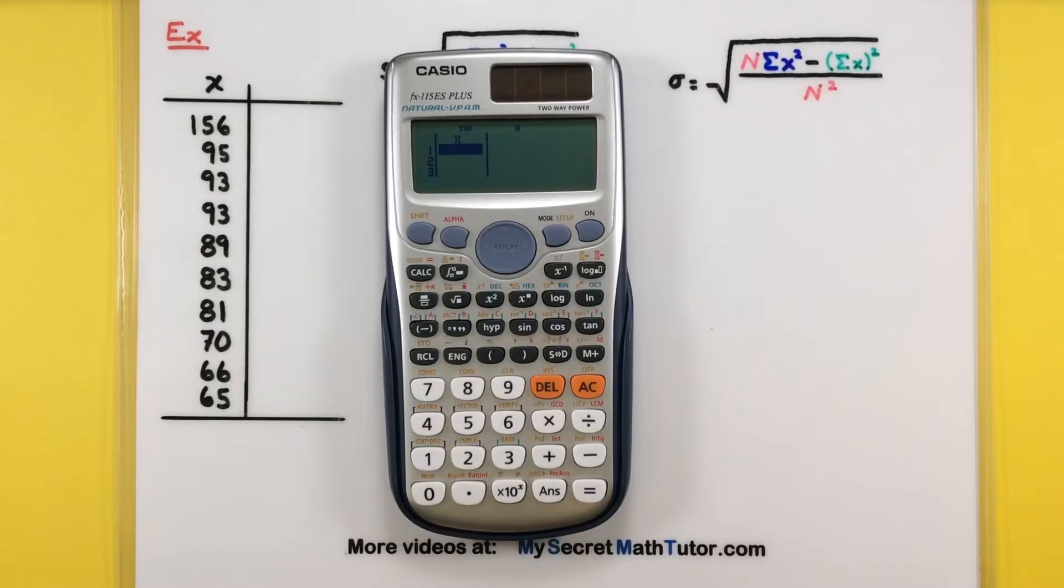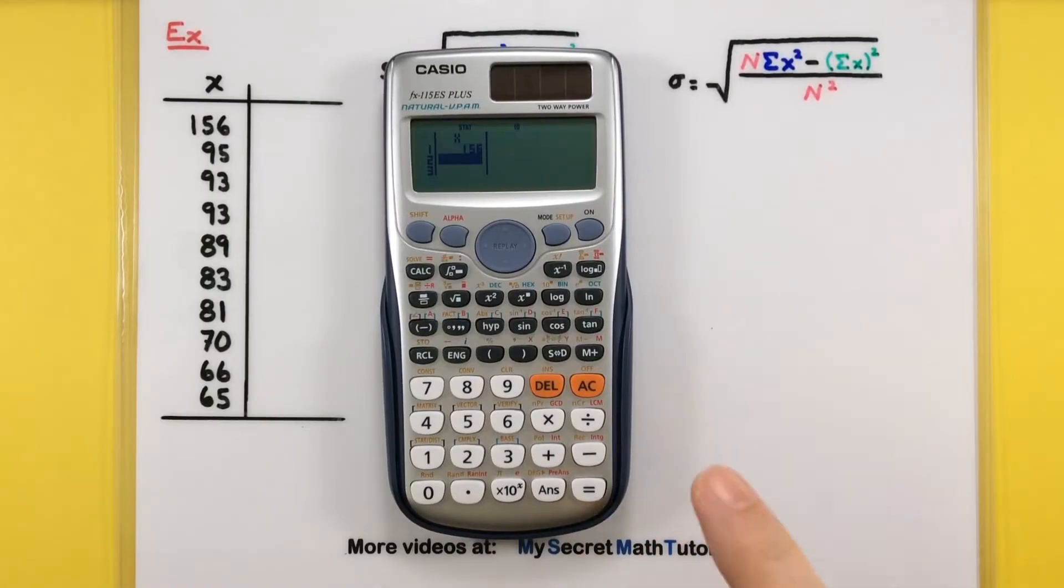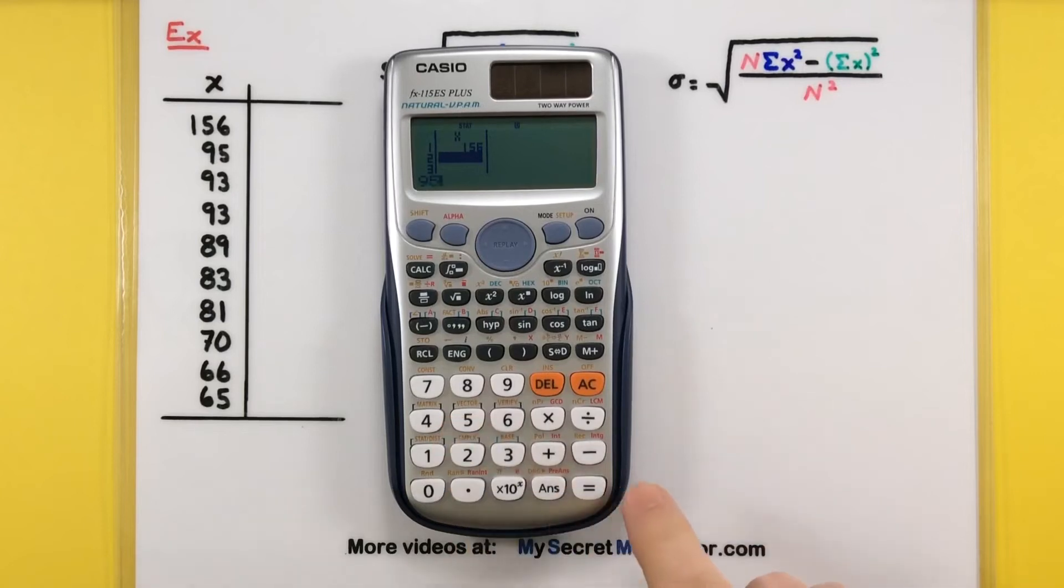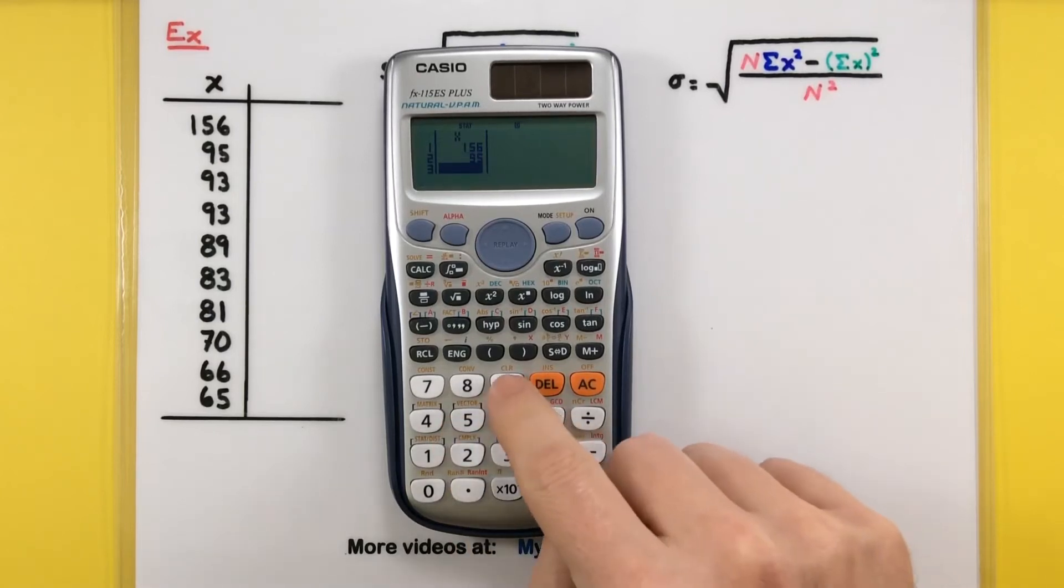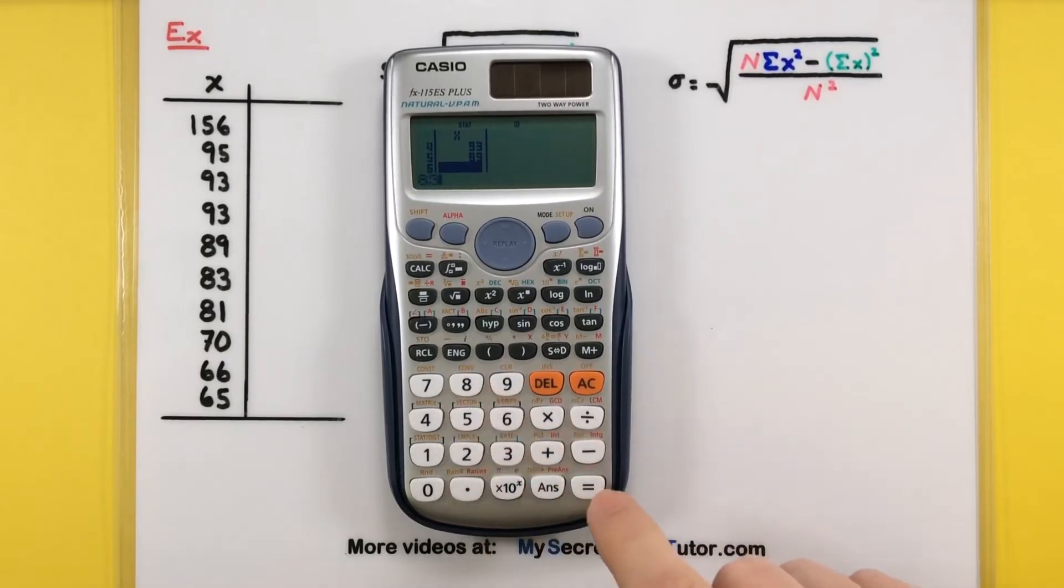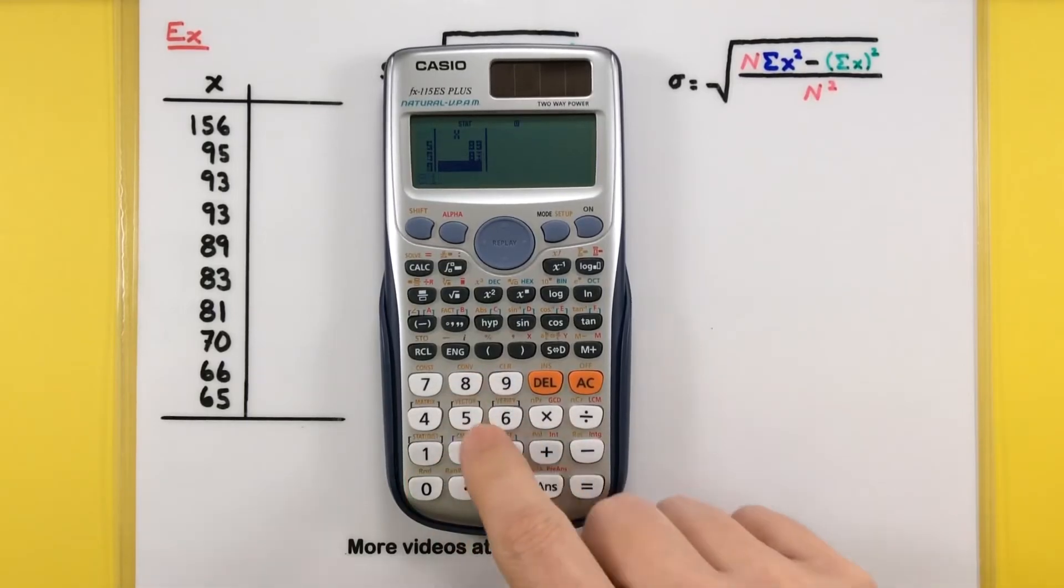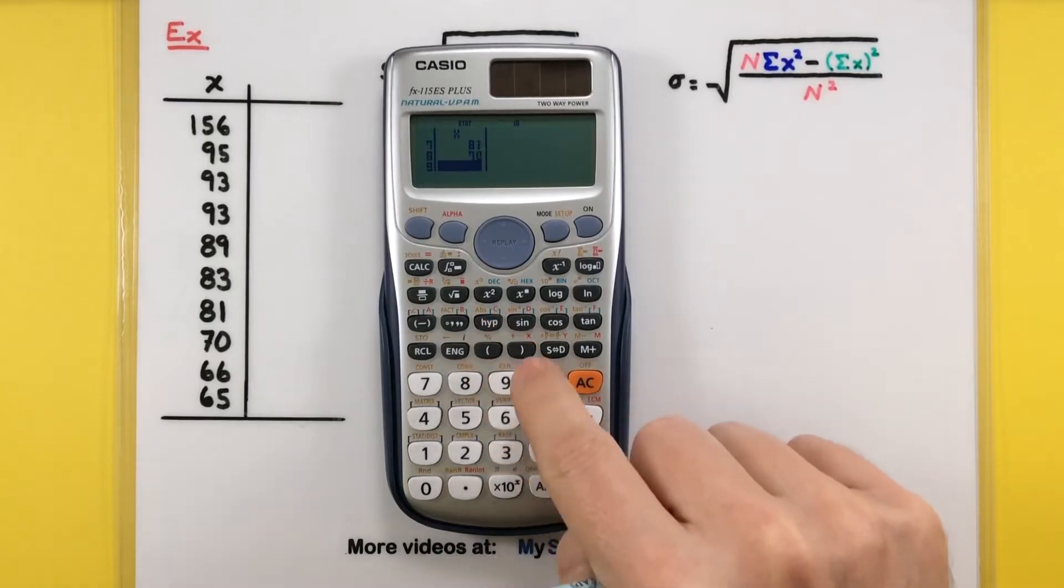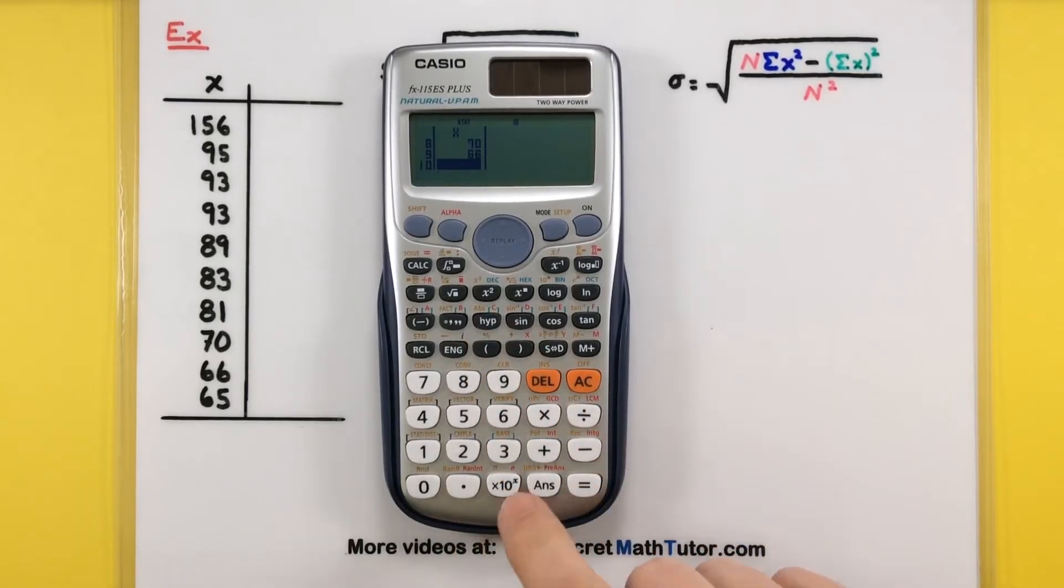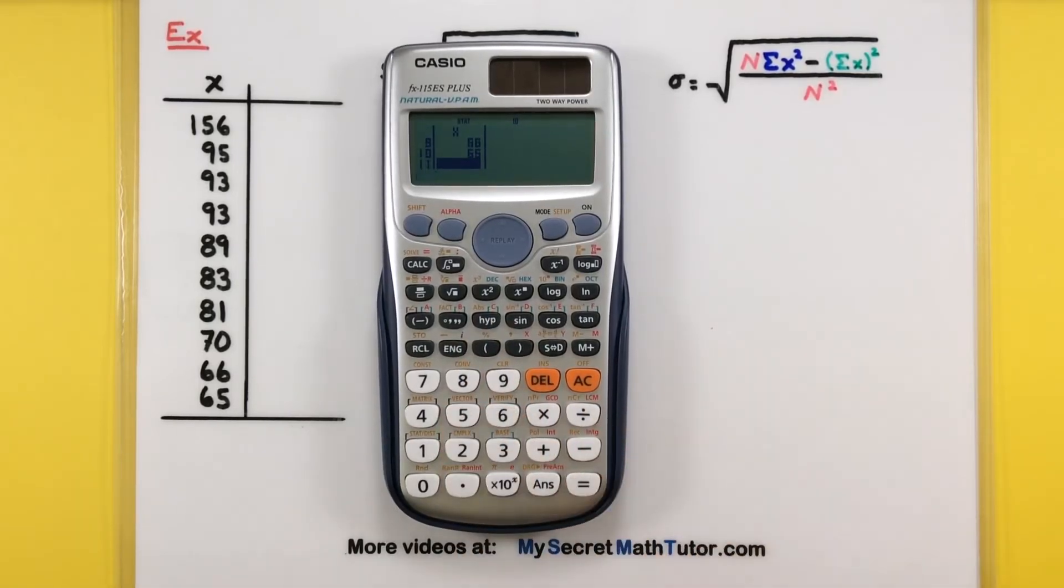Here's where we can now enter in all of that data. I have 10 data points, so we'll just type them in one at a time. Every time I'm done typing in, press enter and it'll go to the next line. And we'll just keep going bit by bit. So let's see, 156, 95, 93, 93, 89, 83, 81, 70, 66, and 65. Okay. So there's all of our data. It's in the calculator. It's safe. Now we need to figure out how it can calculate that standard deviation.